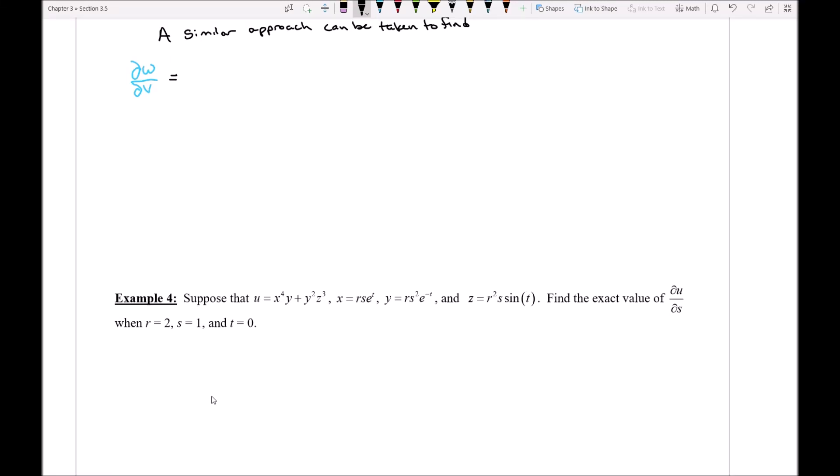Example number four highlights exactly the sort of concept that we're talking about here. You can see that I have a formula U that has three input variables, and the X, Y, and Z formulas also have three input variables. And I want you to calculate this partial derivative and evaluate it at a specific point.